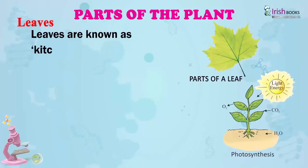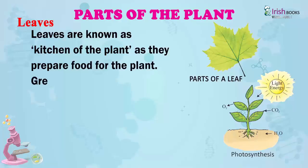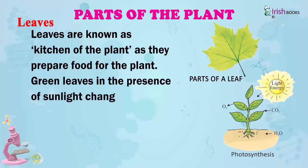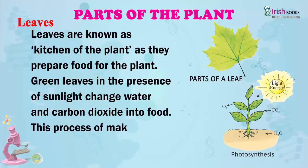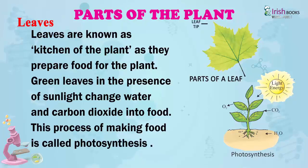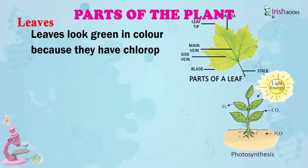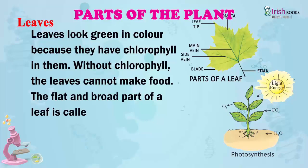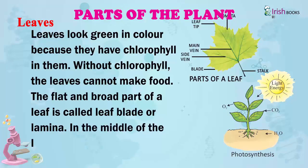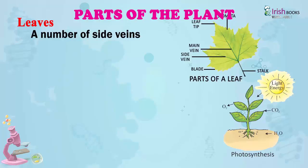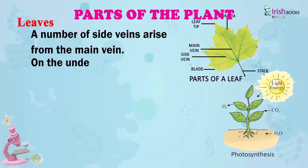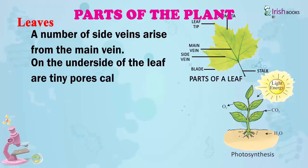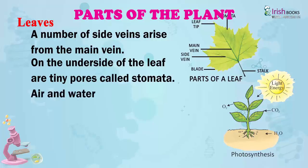Leaves. Leaves are known as the kitchen of the plant as they prepare food for the plant. Green leaves in the presence of sunlight change water and carbon dioxide into food. This process of making food is called photosynthesis. Leaves look green in colour because they have chlorophyll in them. Without chlorophyll, the leaves cannot make food. The flat and broad part of a leaf is called the leaf blade or lamina. In the middle of the leaf is the main vein. A number of side veins arise from the main vein. On the other side of the leaf are tiny pores called stomata. Air and water can pass through these pores.